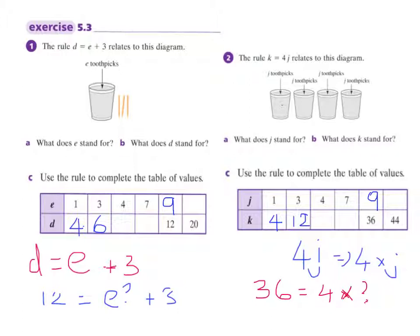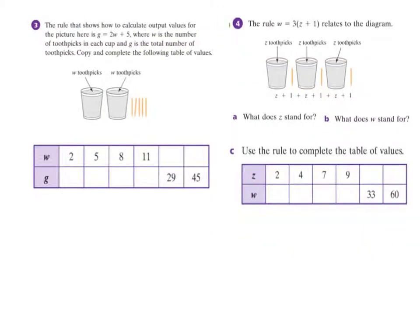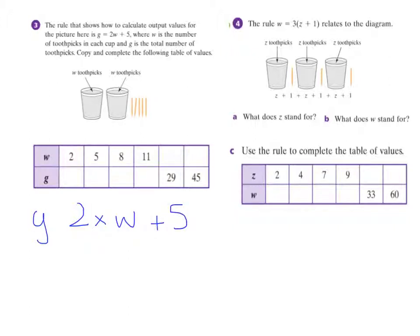This one is very similar but we've got a little bit more complicated rule. It says the rule shows how to calculate output values for the pitcher. We've just got this rule, where W is the number of toothpicks in each cup and G is the total number of toothpicks. So this time W is the number of toothpicks in each cup and G is the total amount. So this time we've got 2W because we've got 2 cups, and we've got our 5 left over. I'll write down my rule: 2 times W plus 5.